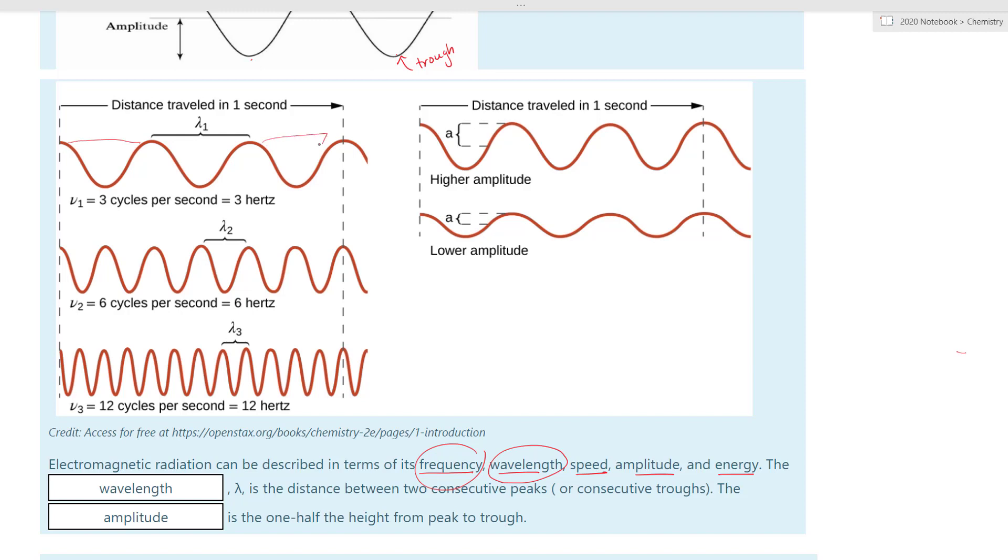And here we have, how many cycles does it have? We have six cycles. One, two, three, four, five, six cycles. And down here we have 12 cycles. So these three types of waves tell us the three different types of frequency. If you notice right here, we have Hertz. Hertz is basically the number of cycles per second.